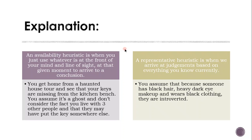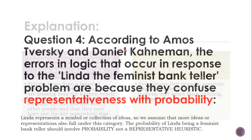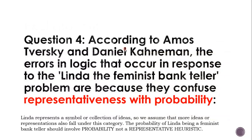An availability heuristic is when you use whatever is at the front of your mind at a given moment to arrive at a conclusion — for example, you get home from a haunted house tour and see your keys are missing from the kitchen bench, so you assume it's a ghost and don't consider that your three housemates may have moved them. A representative heuristic is when we arrive at judgements based on everything we know currently — you assume that because someone has black hair, heavy dark eye makeup, and wears black clothing, they are introverted. Linda represents a symbol or collection of ideas, so we assume more ideas also fall under this category.